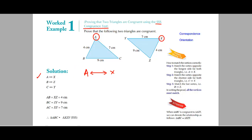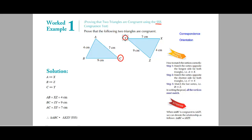The shortest side is 4 cm and the corner which is opposite to 4 is C. In the second triangle the shortest side is also 4, and the corner which is opposite to this is Y. Therefore, C matches with Y. Only one corner is left.